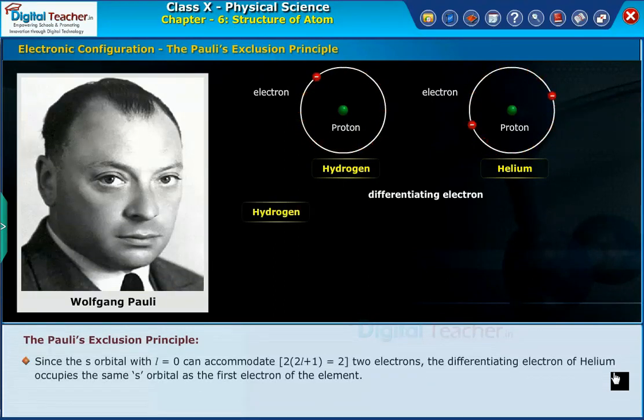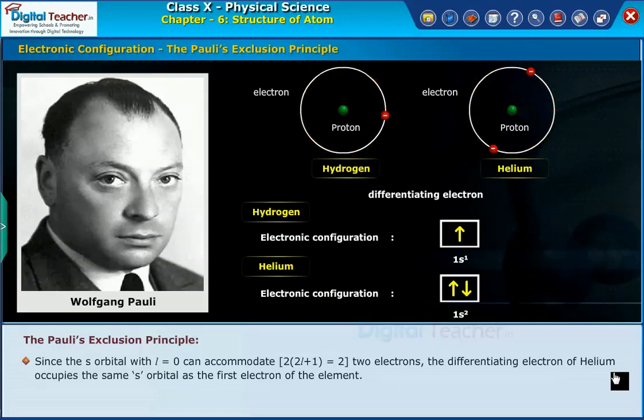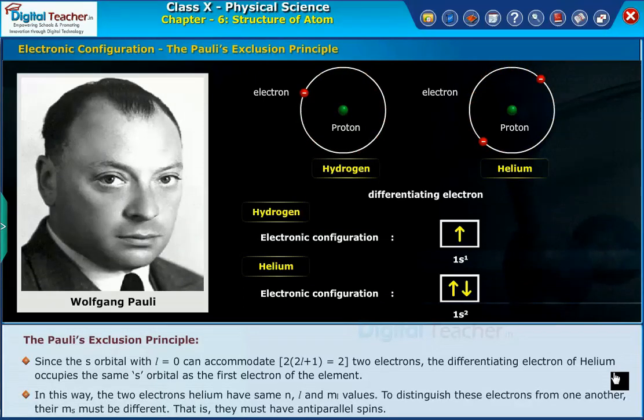Since the s orbital with l=0 can accommodate two electrons, the differentiating electron of helium occupies the same s orbital as the first electron of the element. In this way, the two electrons of helium have same n, l, and mₗ values.